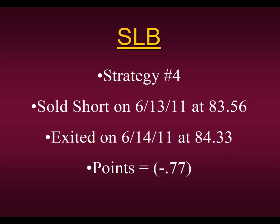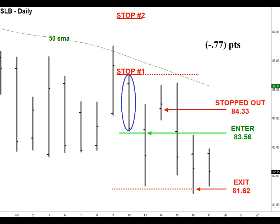Our next trade was in SLB — Schlumberger — strategy number four. Once again, we went short on the 13th, and this one we got stopped out with a loss. We exited on the 14th, the very next day, for a little over three-quarters of a point — a 77-cent loss. This is clearly below the buy-sell line, price is below, so we're going short. And we have our valid setup bar — out of all these bars, this is the only one that is a valid setup bar to go short using strategy number four. We entered short once we traded one tick below at 83.56. Here's our conservative stop placement at stop placement number one, and our aggressive stop placement at stop placement number two. After calculating those stop placements, we calculate our exit level, which came out to 81.62. You simply place an open order to exit if you're wrong at your stop, and an open order to cover if you're right, then sit back and manage the trade.